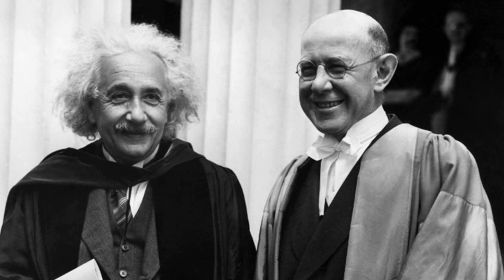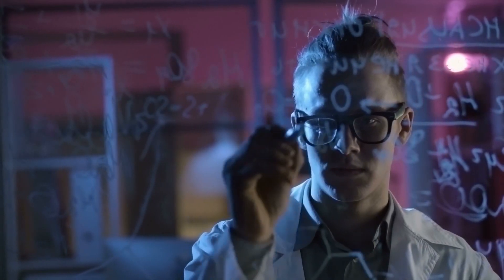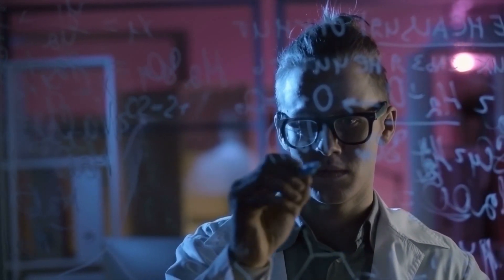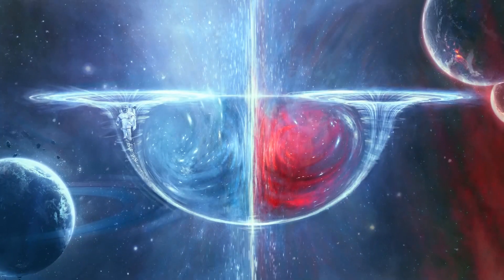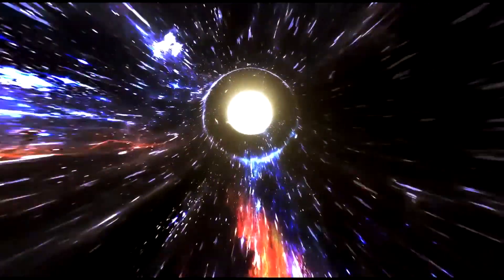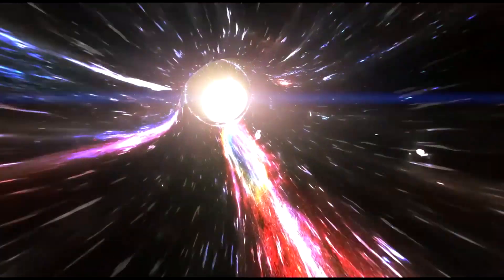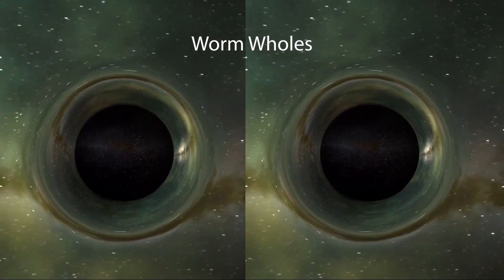In 1935, Einstein and physicist Nathan Rosen used the theory of general relativity to elaborate on the idea, proposing the existence of bridges through space-time. These bridges connect two different points in space-time, theoretically creating a shortcut that could reduce travel time and distance. The shortcuts came to be called Einstein-Rosen bridges or wormholes.